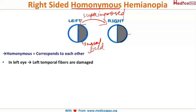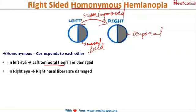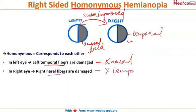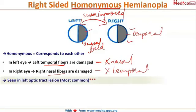In the left eye, the nasal field is lost, and in the right eye, the temporal field is lost. So in the left eye the temporal fibers are damaged, and in the right eye the nasal fibers are damaged. There is no nasal field and no temporal field. This is seen in left optic tract lesion.